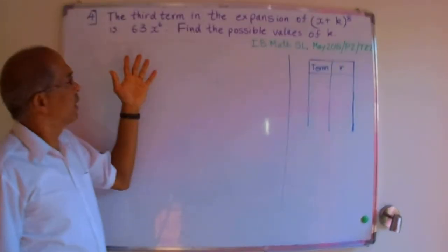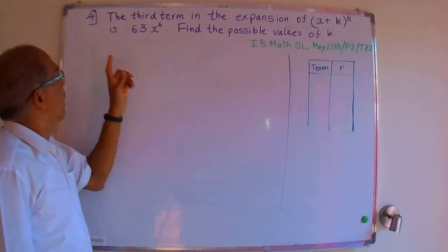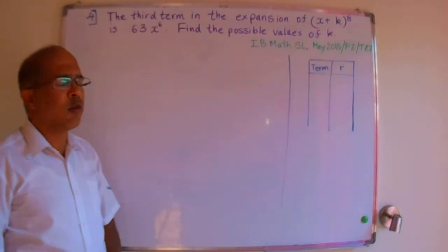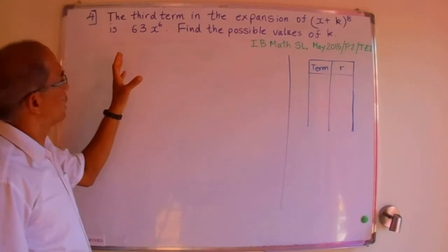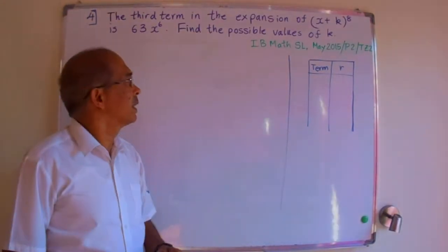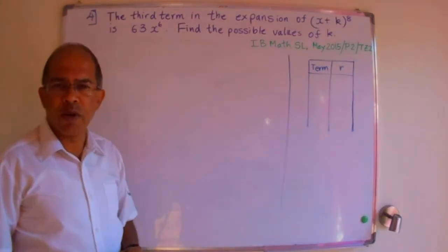So I've written the question down here and the question reads: the third term in the expansion of x plus k to the power 8 is 63x to the power 6. Find the possible values of k.